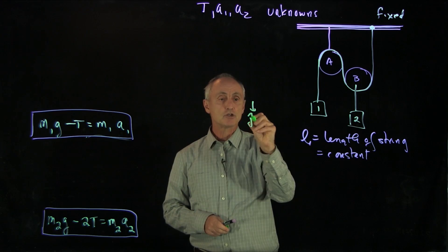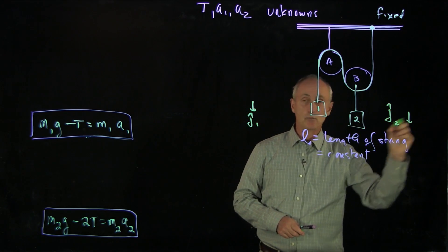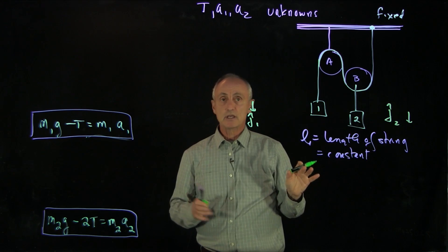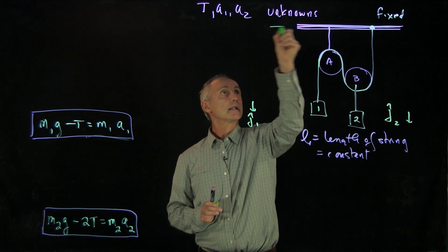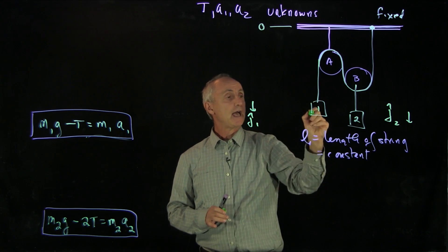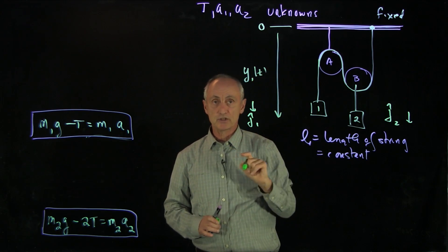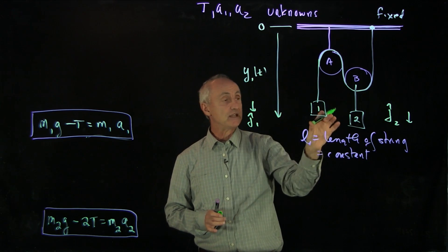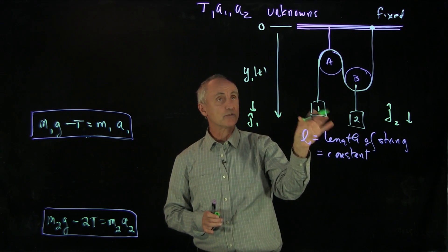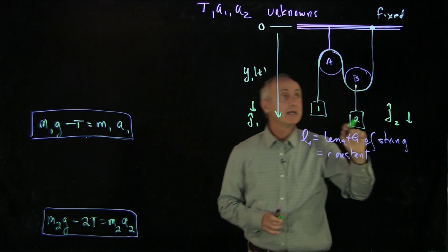Recall that we had j-hat-1 down and j-hat-2 downwards. What that implies is that we're choosing some origin, and let's choose an origin up here. For a coordinate function for object 1, it has to be consistent with our choice of what we mean by j-hat-1. So in this sense, y1 is a positive quantity when we're going downward.